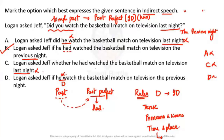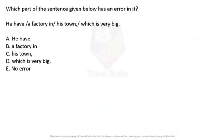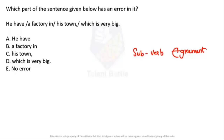I hope you loved that trick — it saves a lot of time. Now for the next question: which part of the sentence has an error? The sentence is: 'He have a factory in his town which is very big.' We've already discussed subject-verb agreement: when the subject is singular, the verb must be singular; when the subject is plural, the verb must be plural.